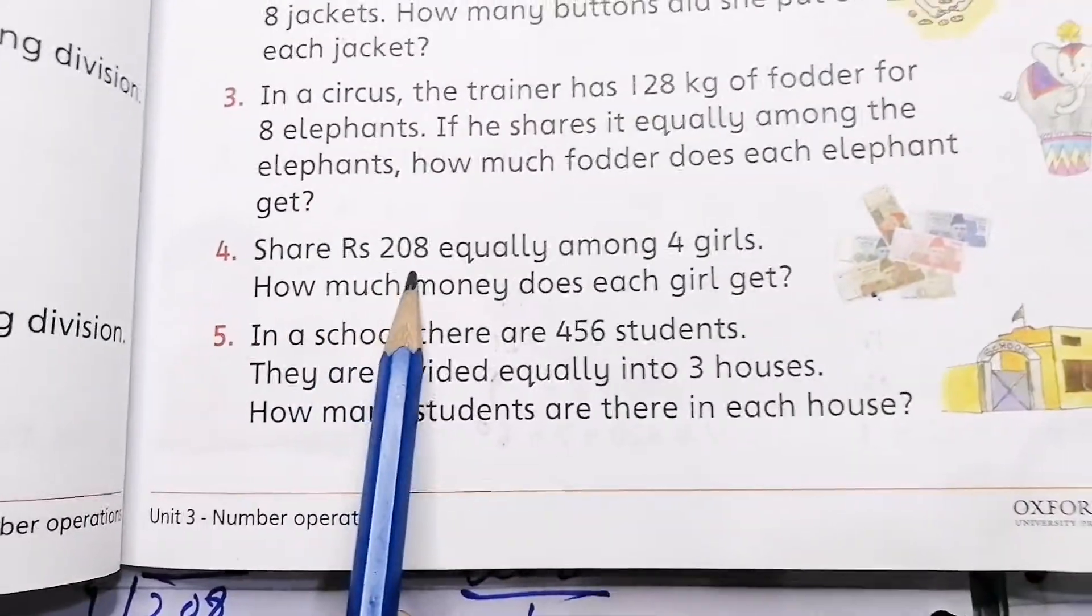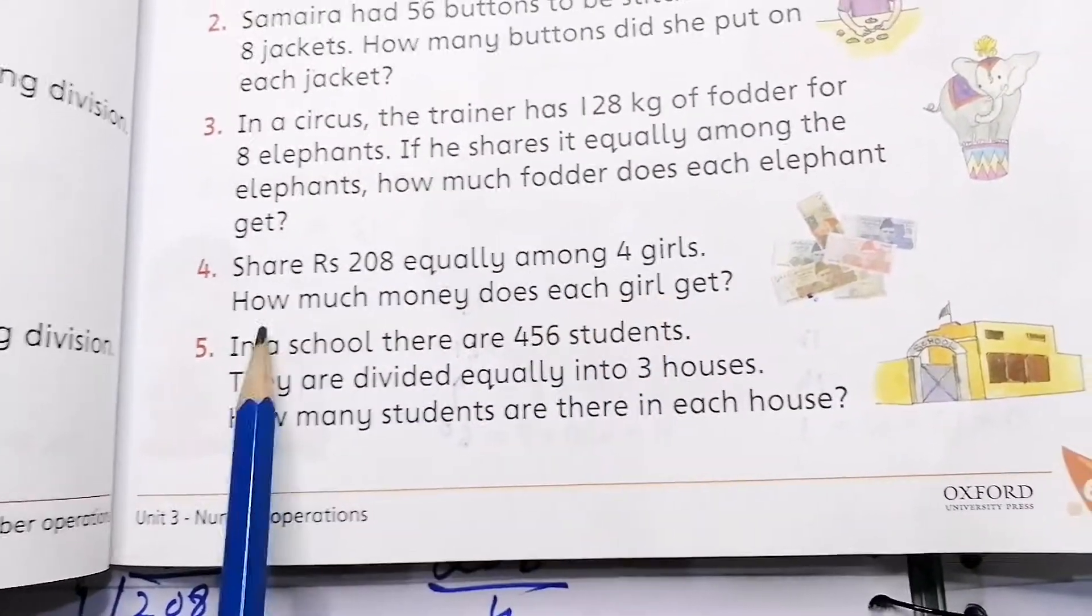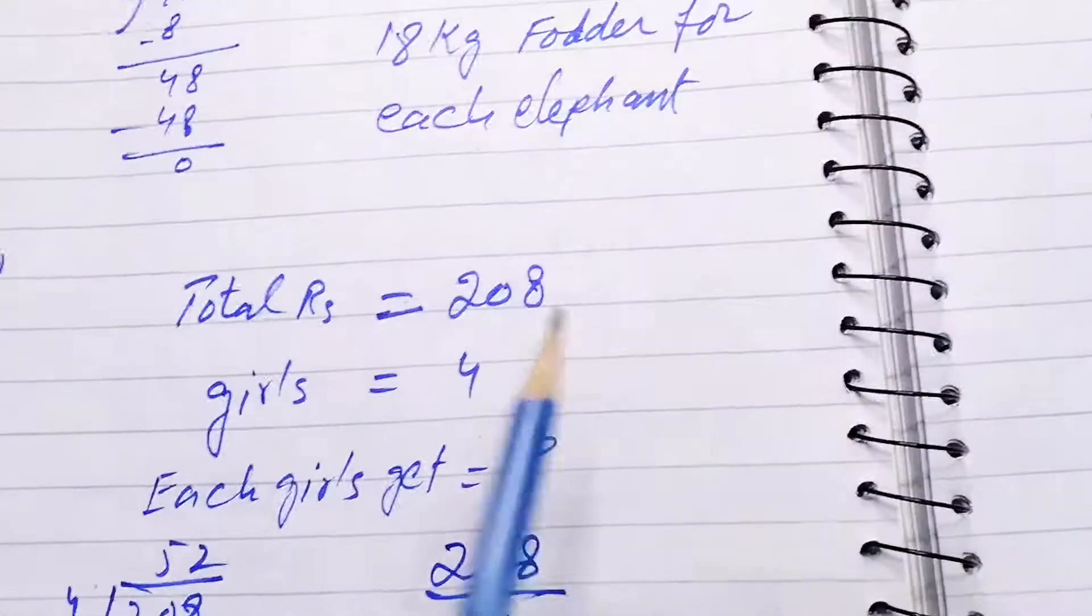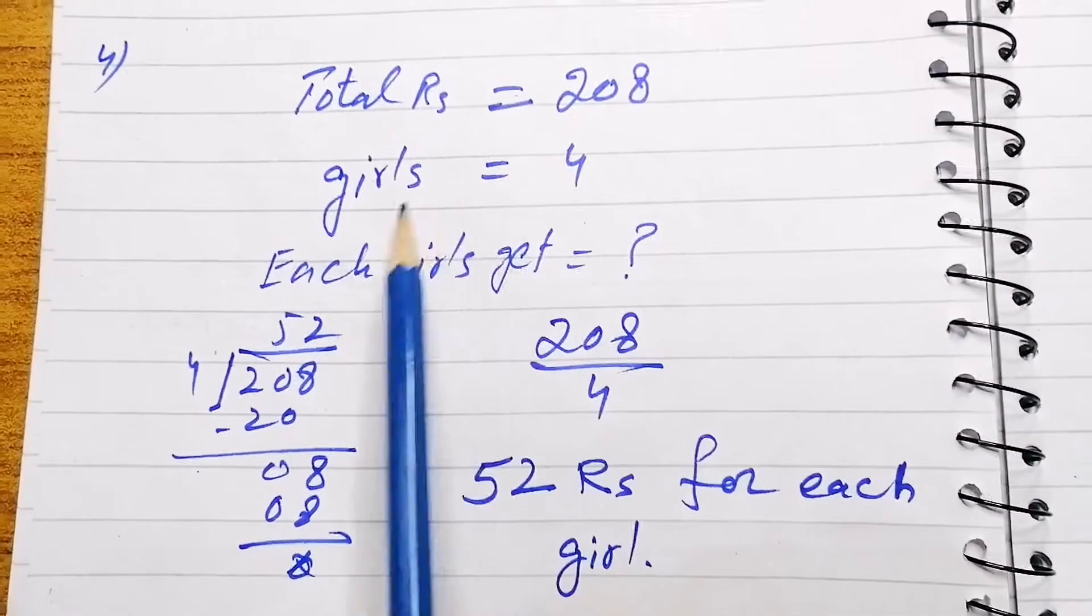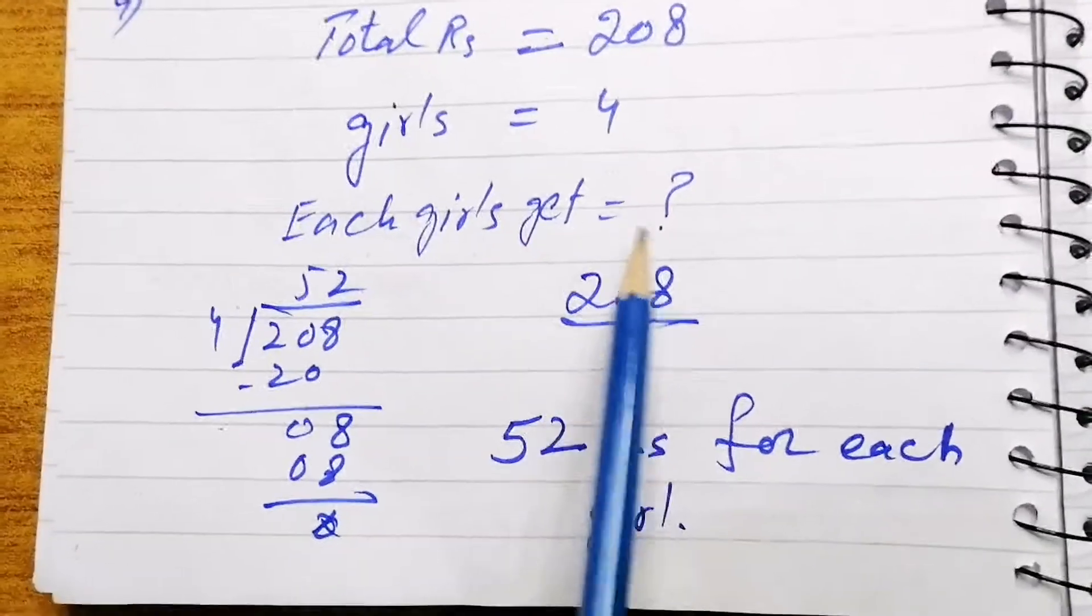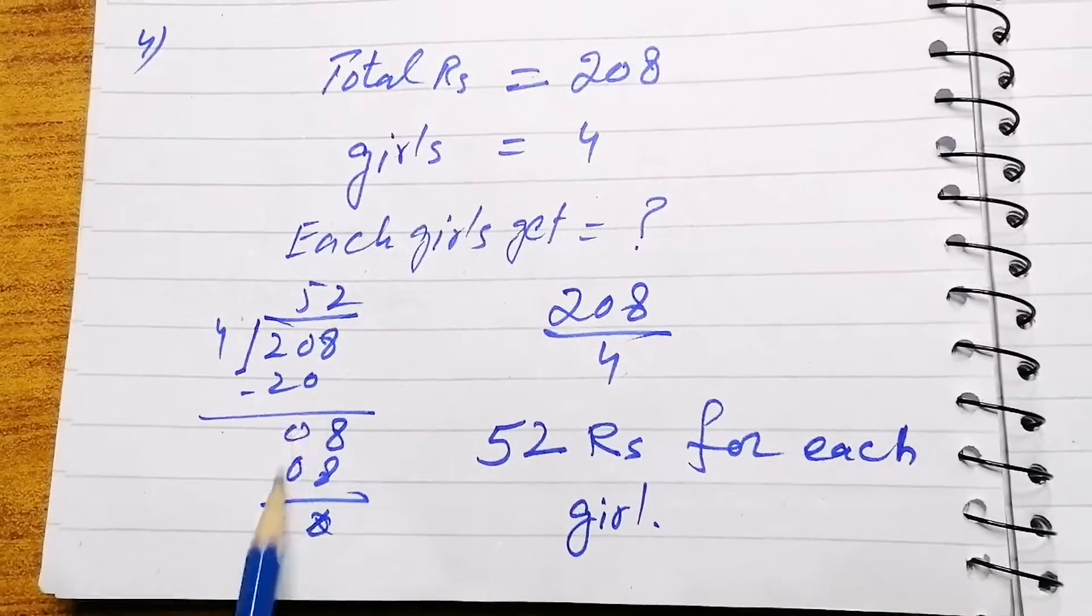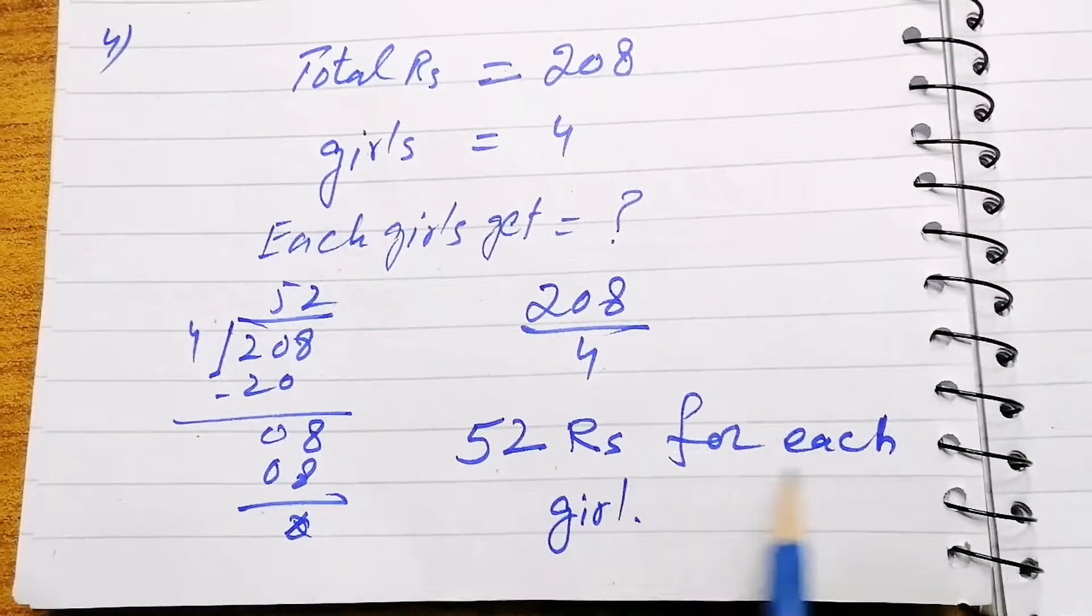Number 4: Share rupees 208 equally among 4 girls. How much money does each girl get? Total rupees are 208, girls are 4. Each girl will get how many? We will divide 208 by 4, so by dividing we get 52 rupees for each girl.